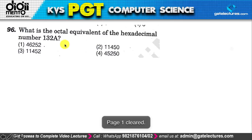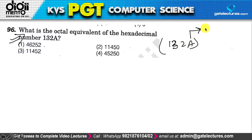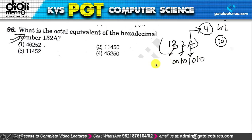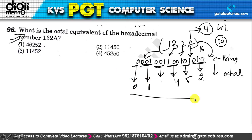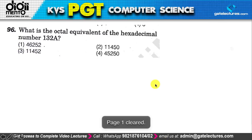Question 96: find the octal equivalent of hexadecimal number 132A. Each hex digit is 4 bits: A = 1010, 2 = 0010, 3 = 0011, 1 = 0001. So binary is 0001 0011 0010 1010. Grouping in 3 bits for octal: 0 = 0, 001 = 1, 001 = 1, 100 = 4, 101 = 5, 010 = 2. The answer is 11452, which is option 3.